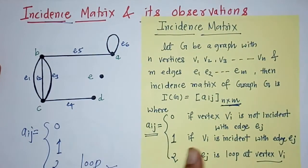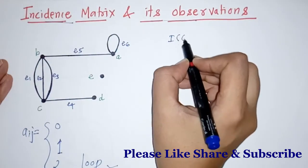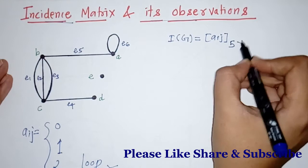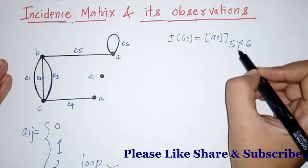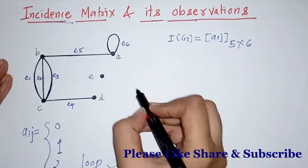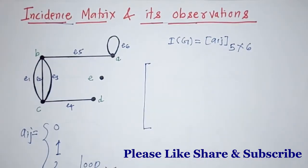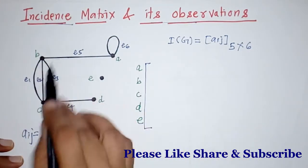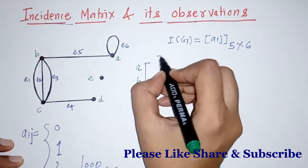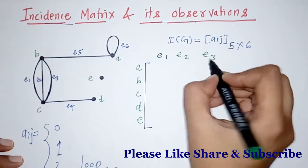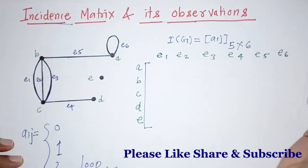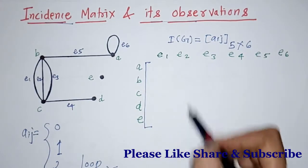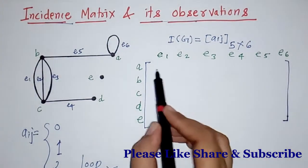Now we have to find the incidence matrix for this graph. This matrix is given by a_ij of order 5 by 6, since there are five vertices and six edges. We write the vertices A, B, C, D, and E as rows, and the edges E1, E2, E3, E4, E5, and E6 as columns.